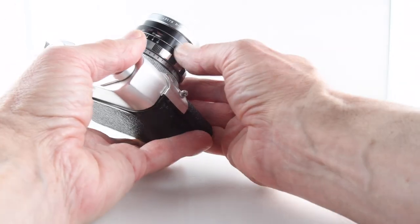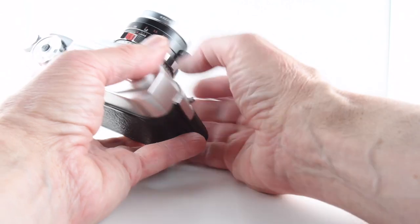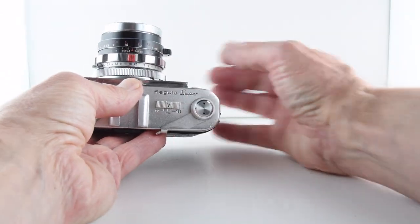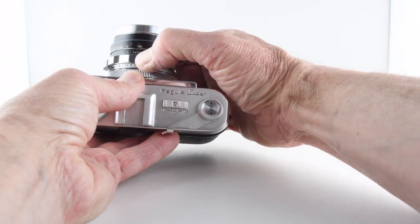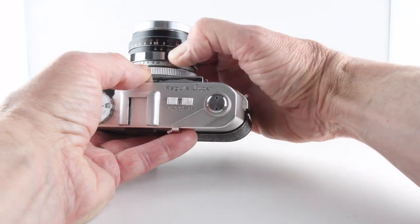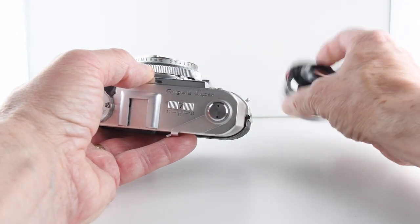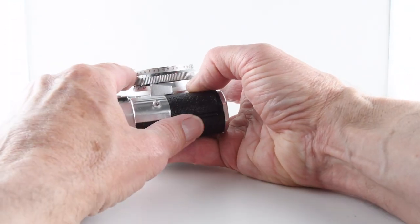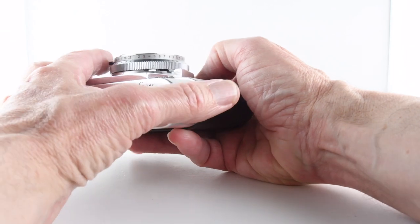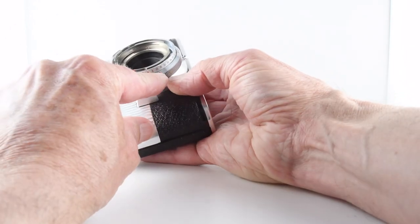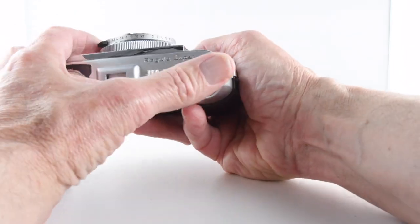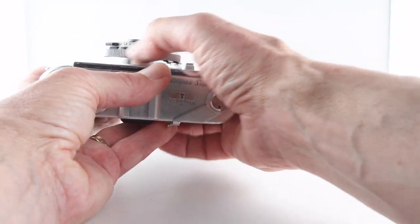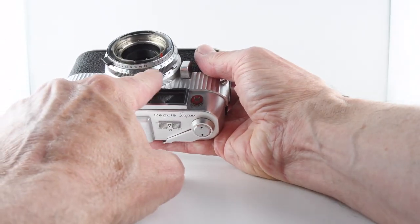We have our focus ring, and then a red button there which, once we press, allows us to take the lens off. Then we can see our light meter numbers that we move to the dial there, and that gives us the combination of apertures and shutter speeds.